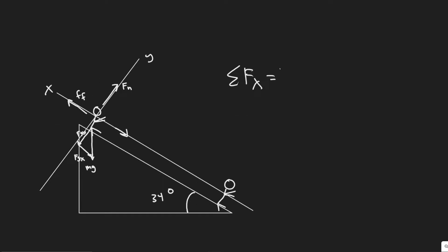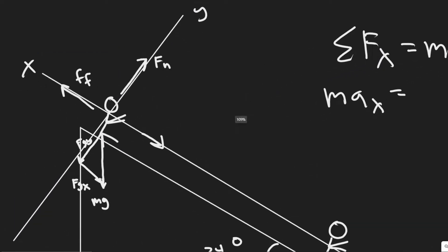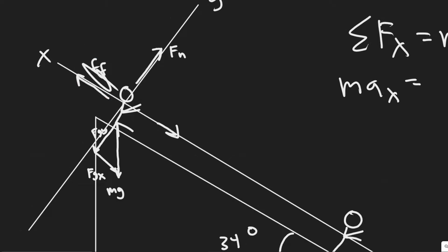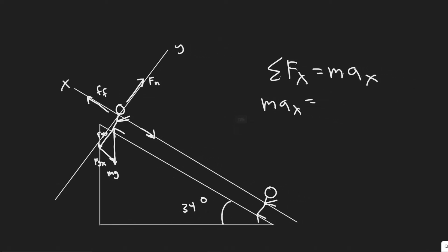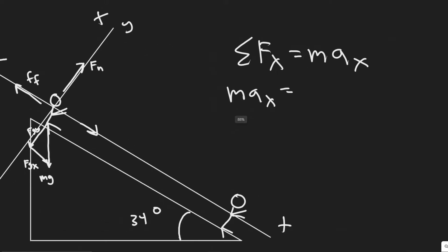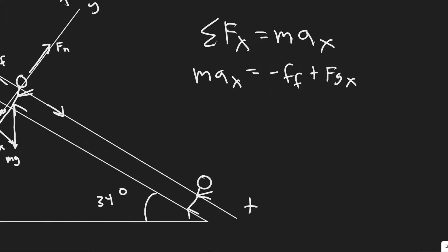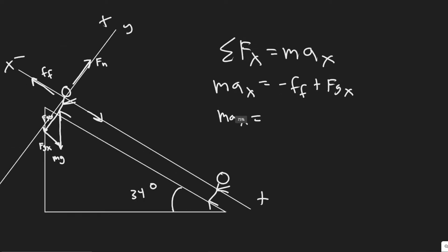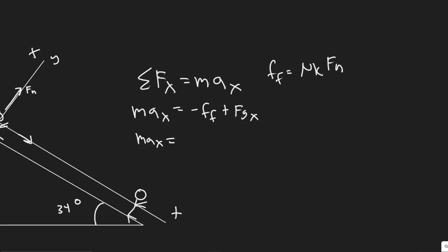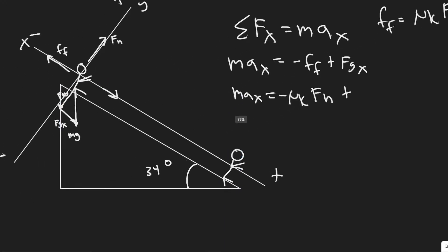Summing forces along x: max equals the sum of forces in the x-direction. There are only two x-forces — friction and the x-component of gravity (fg_x). To find fg_x, we use trig: sine of theta equals fg_x over mg, so fg_x equals mg·sin(θ).